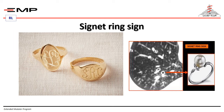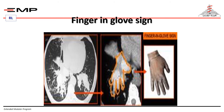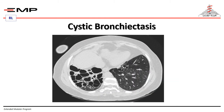What I will find on CT suggestive of bronchiectasis includes the signet ring sign — like a ring with a signet — the tram track sign, and the finger-in-glove sign.